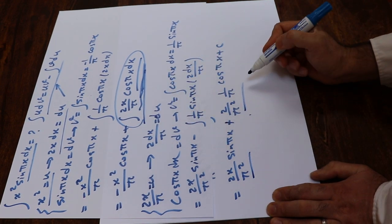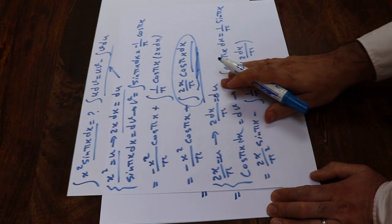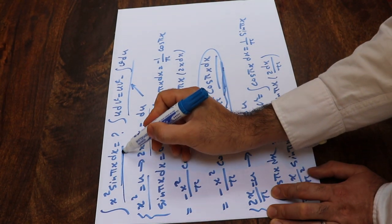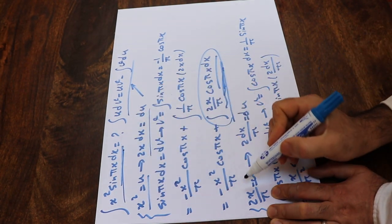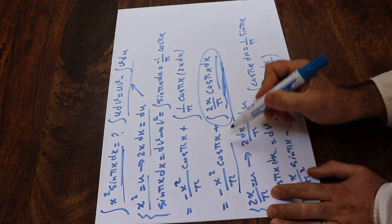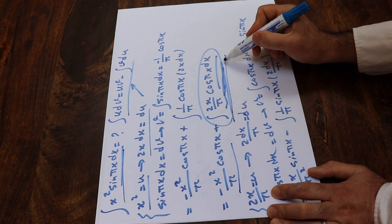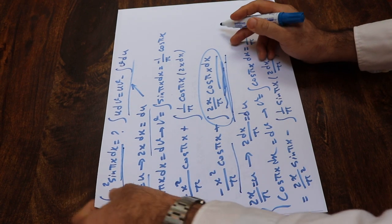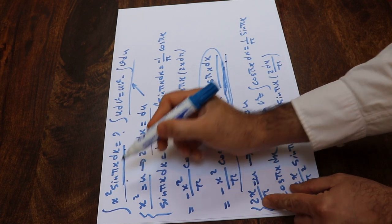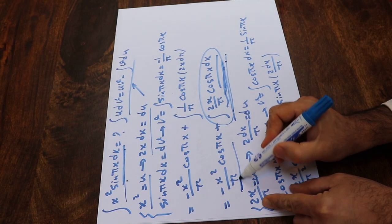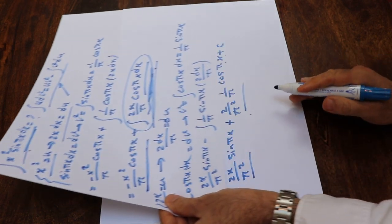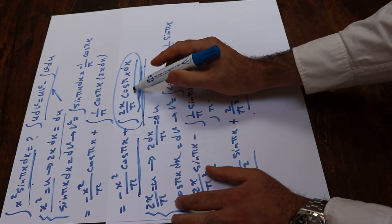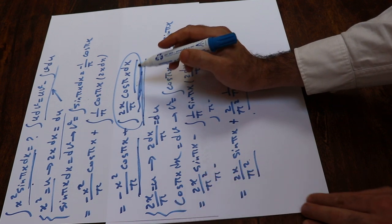So now you have the solution of this integral, which is basically this term plus that term. You know that the solution of the original integral was equal to the first term plus the solution of the second integral, and the solution of that second integral you just calculated. Therefore, the solution of this original integral will be the first term plus these two terms, which is the solution of the second integral.